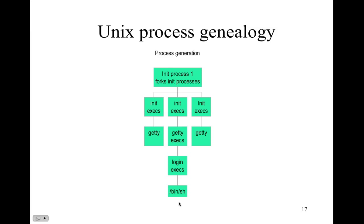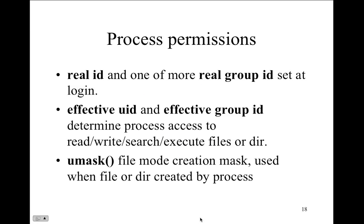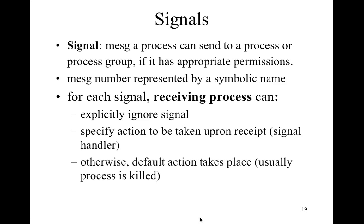In terms of process permissions — similar to files — we have real IDs set at login, and effective user IDs and group IDs. When you run a process, you have control over it and other users won't see your process because it's owned by you. The kernel keeps track of everybody who owns files, who owns processes, and who has what open. All these kernel-level data structures manage the multiprocessing system with multi-user support in mind.